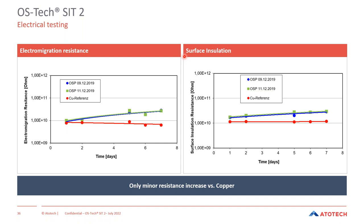Finally, electrical testing was done including electromigration and surface insulation resistance testing. Results show no significant impact of the OSP, with only minor increases compared to bare copper as a reference — no strong impact of the OSP on these electrical properties.